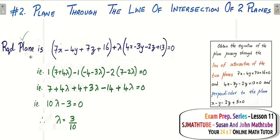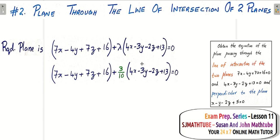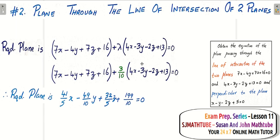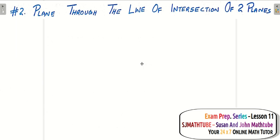We started confidently — let the required plane be P1 plus lambda P2. Something was missing: the value of lambda. Now we plug in lambda equal to 3 by 10, multiply throughout by 10, simplify a little bit, and we have the final equation of the plane.